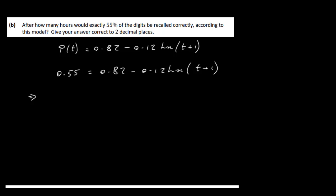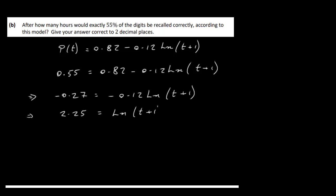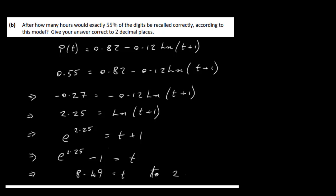Let's work through this. First, bring over the 0.82: that gives −0.27 = −0.12 log(t + 1). Divide across by 0.12, giving 2.25 = log(t + 1). This is in log form, so convert to index form — the log is to base e, so e^2.25 = t + 1. Therefore t = e^2.25 − 1. Working that out on the calculator to two decimal places gives t = 8.49.